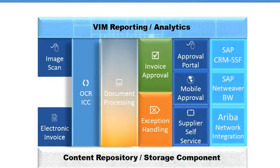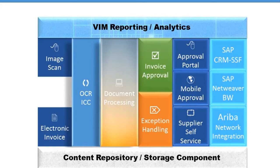We are going to cover the architecture of the vendor invoice management process. The first portion covered is the image scan. An invoice might come as an email through a PDF format or any other format, or an invoice can come manually where it is posted to the mailbox and the accounts payable or office personnel opens the physical invoice and scans it in, or it can come through an EDI.